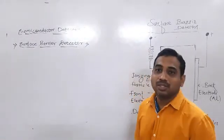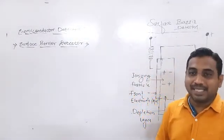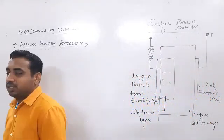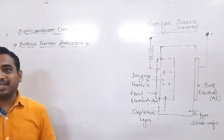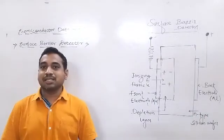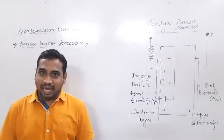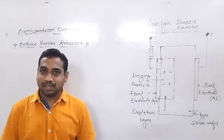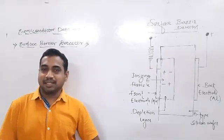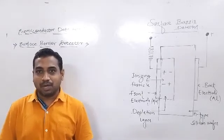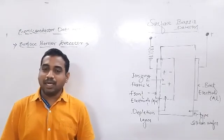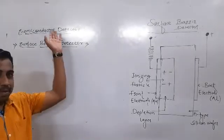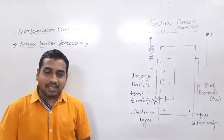Welcome everyone once again to our nuclear physics lectures. We are discussing about the nuclear detector series from the last few days, and we see there are different types of nuclear detectors included in our syllabus. From that we discussed the scintillation counter, proportional counter, GM counters, and ionization chambers, and later we are going to start about the semiconductor detectors.